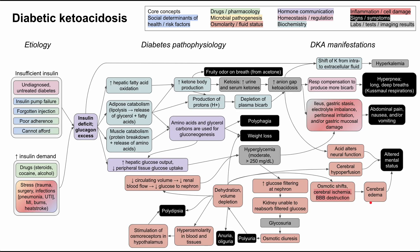That covers this mechanism of disease map for diabetic ketoacidosis. It's quite complicated, with many contributors to the main symptoms: long deep breaths (Kussmaul respirations), abdominal pain, nausea, vomiting, and altered mental status, as well as classic diabetes symptoms like polyphagia, weight loss, polyuria, and polydipsia. I hope this mechanism of disease map was helpful — thank you for listening.